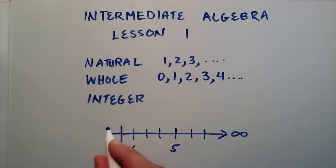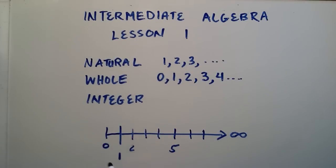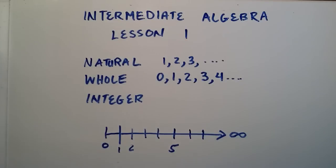So to create a number line for the whole numbers, you simply need to extend it one unit to the left. And now we have our 0 there. And we have a number line for the whole numbers.